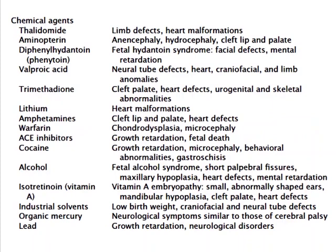Chemical agents, including drugs and medications, may lead to a large variety of abnormalities: thalidomide — limb defect and heart malformation; aminopterine — anencephaly, hydrocephaly, cleft lip and palate; phenytoin — fetal hydantoin syndrome with facial defects and mental retardation; valproic acid — neural tube defect, heart, craniofacial, and limb anomalies; trimethadione — cleft palate, heart defect, urogenital and skeletal abnormalities; lithium — heart malformation; amphetamines — cleft lip and palate, heart defect; warfarin — chondrodysplasia and microcephaly; ACE inhibitors — growth retardation and fetal death; cocaine — growth retardation, microcephaly, behavioral abnormalities, and gastroschisis; alcohol — fetal alcohol syndrome with short palpebral fissures, maxillary hypoplasia, heart defect, and mental retardation.